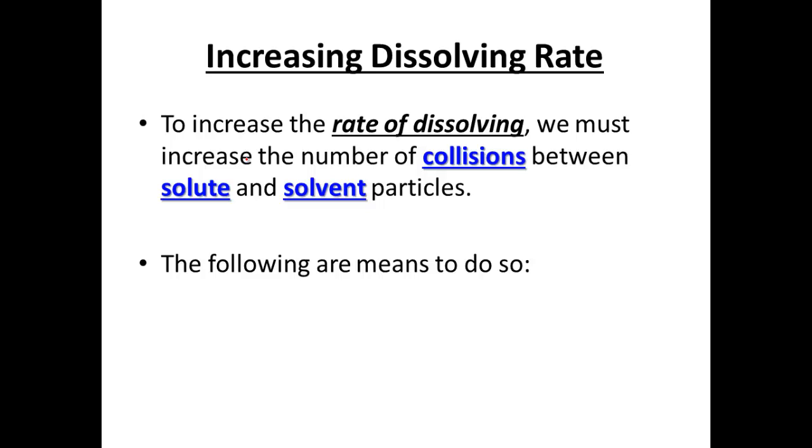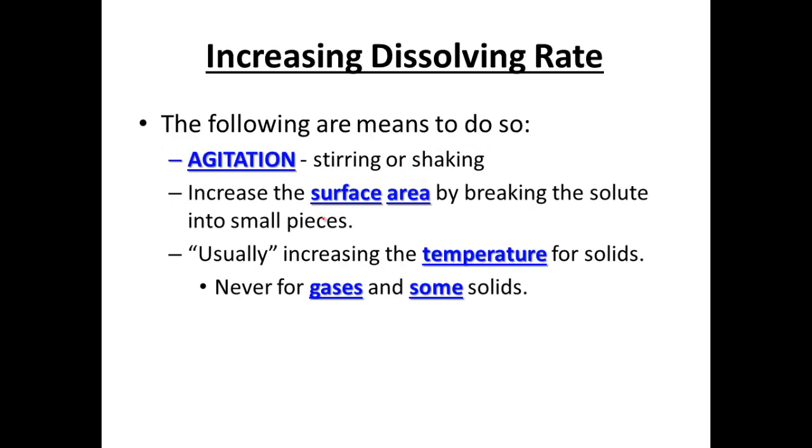How we can increase the rate of dissolving: we must increase the rate of collisions between the solute and the solvent. Different ways we can increase those collisions is by first off agitation. Agitation is stirring or shaking, mixing up. If you're making Kool-Aid you want to stir the sugar in the pitcher. Agitation increases our surface area.